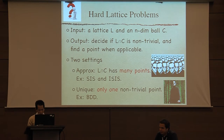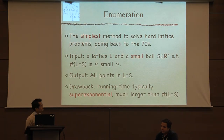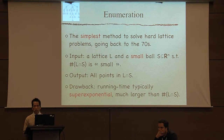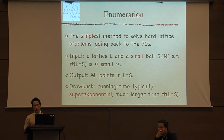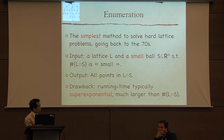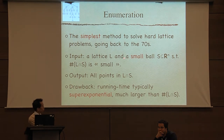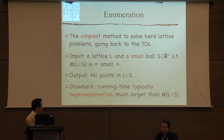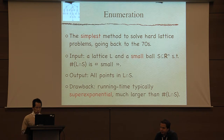Enumeration is the simplest method to solve these hard lattice problems, going back to the 1970s. If you didn't know anything about lattices, this is probably the algorithm you would come up with. You have a lattice and restrict to a small ball, wanting the number of points in the intersection to be small, and enumeration finds all the points in that intersection. It's very simple and widely used. The problem is that it's very expensive — super-exponential. In small dimension it's fine, but in high dimension it's much larger than the number of solutions.